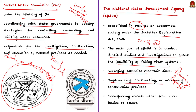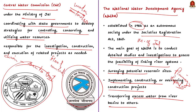NWDA's key activities include surveying potential reservoir sites and planning river interconnections, preparing pre-feasibility and feasibility reports and detailed project reports on river linking projects, implementing construction projects related to water resource management, and transferring excess water from river basins to others while ensuring the needs of the originating basins are met. Overall, NWDA plays a crucial role in planning and managing India's water resources to prevent shortages and promote efficient use across states.